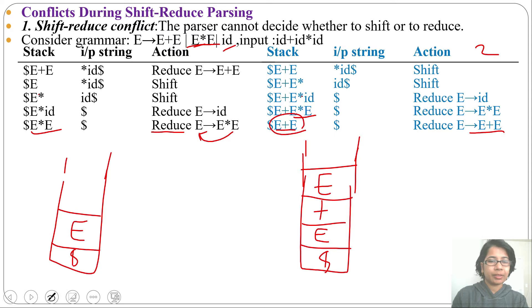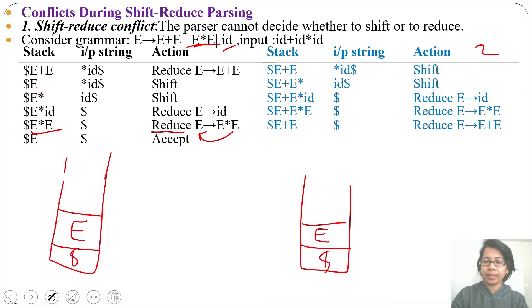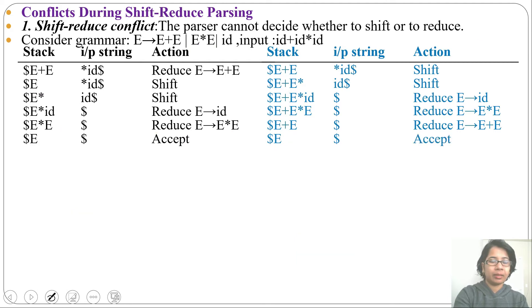In the case of the first parser, the stack contains E and it is the initial state, so it will accept. Here one parser reduced while the other parser shifted. When a parser cannot decide whether to reduce or to shift, that is a shift-reduce conflict.